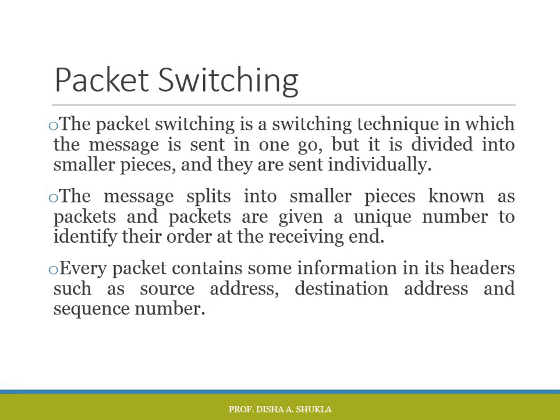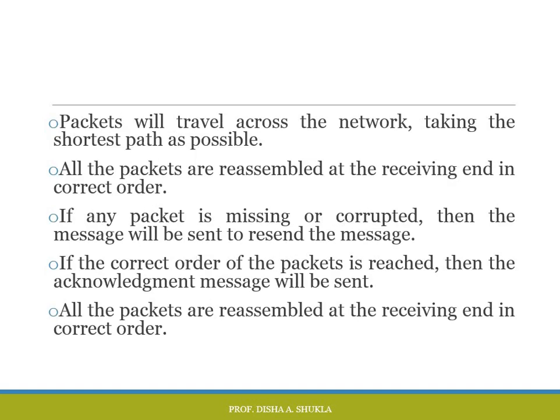The last type of switching technique is packet switching. In packet switching, the message is divided into smaller pieces called packets, which are sent individually. The packets are given unique numbers to identify their order at the receiving end. Every packet contains header information such as source address, destination address, and sequence number. Packets travel across the network taking the shortest path possible. At the receiving end, packets are reassembled in the correct order. If any packet is missing or corrupted, a request is sent to resend the message. When the correct order is achieved, an acknowledgement message is sent.